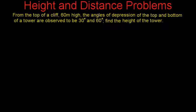Here we have one more question based on height and distance problems. The problem statement says: from the top of a cliff 60 meters high, the angle of depression of the top and bottom of a tower are observed to be 30 degrees and 60 degrees. Find the height of the tower.